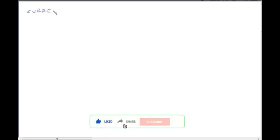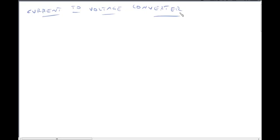In this lecture video, we will discuss current to voltage converter using op-amp. So input current is there and output is the voltage. It should vary according to input current. So this is an op-amp.